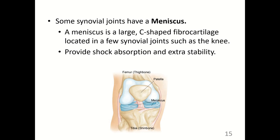Some synovial joints have a meniscus. A meniscus is a large, C-shaped fibrocartilage located in a few synovial joints, such as the knee. A meniscus provides shock absorption and extra stability in the joint as it forms an articulating surface, and it also reduces compression because it is fibrocartilage.